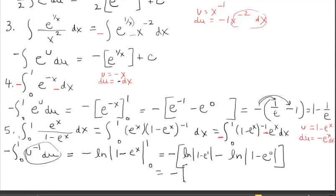Evaluating: negative times the natural log of the absolute value of 1 minus e to the 1, minus the natural log of the absolute value of 1 minus e to the 0. The second term becomes ln of absolute value of 1 minus 1, which is ln of 0 — and that doesn't exist. We'll discuss this unanticipated issue in class together, but the integration and FTC process itself was accomplished.